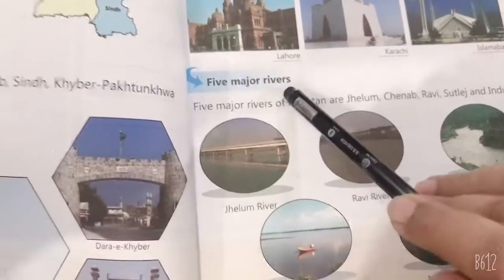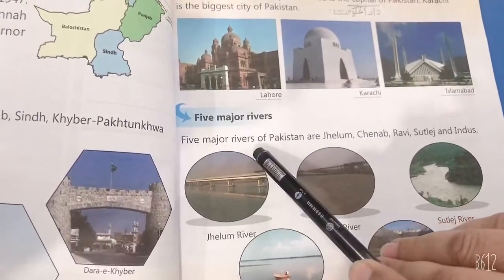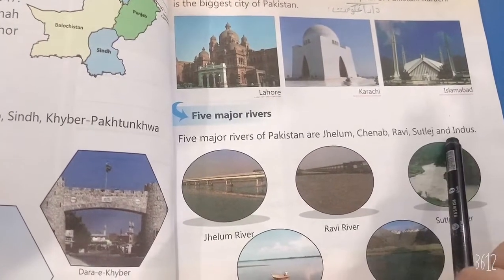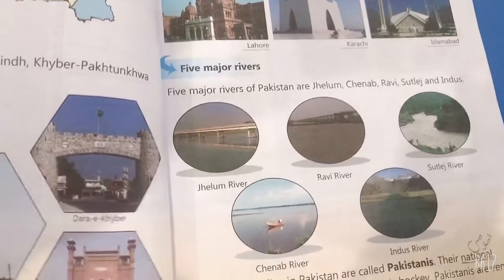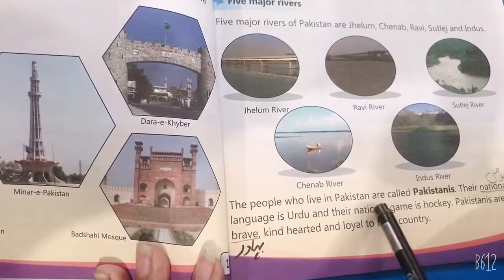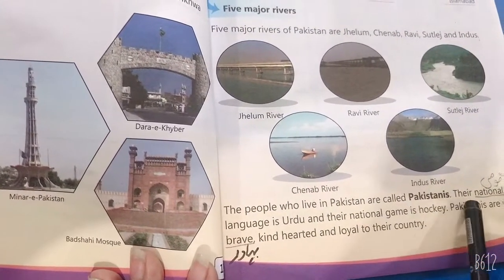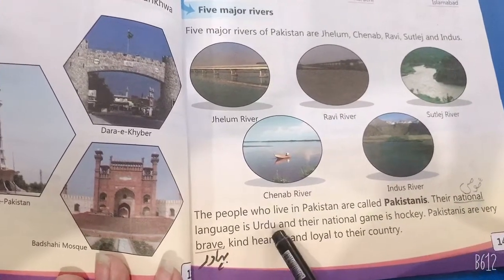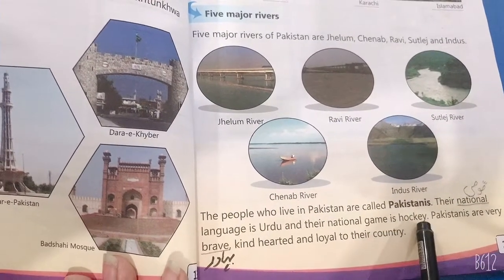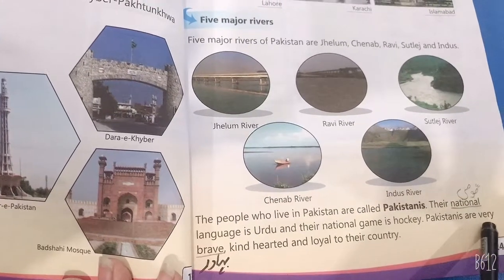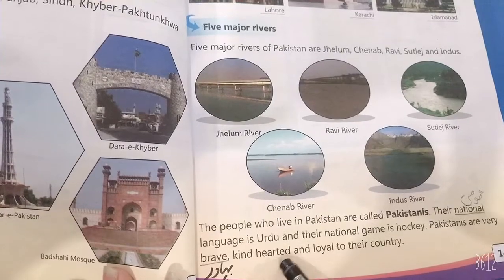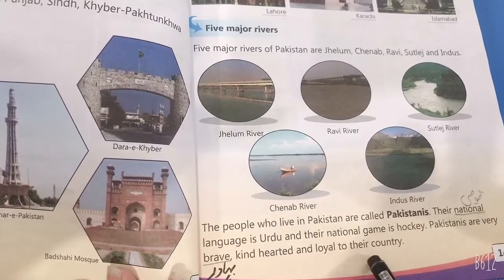Five major rivers of Pakistan are Jhelum, Chenab, Ravi, Sutlej, and Indus River. The people who live in Pakistan are called Pakistanis. Their national language is Urdu and their national game is hockey. Pakistanis are very brave, kind-hearted, and loyal to their country.